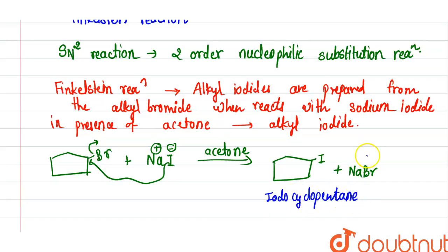So in the Finkelstein reaction, when bromocyclopentane reacts with sodium iodide in the presence of acetone, I- attacks on the carbon where the bromine is attached. That carbon, I- is attacked and Br- leaves. So iodocyclopentane is formed.